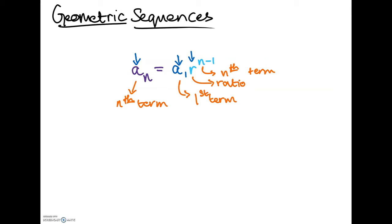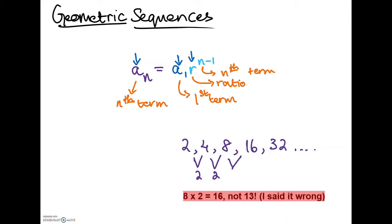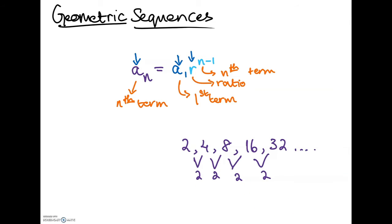In today's video we're going to be talking about geometric sequences. A geometric sequence is essentially any sequence where a constant multiplier is being multiplied. For example, the sequence 2, 4, 8, 16, 32 — 2 times 2 is 4, 4 times 2 is 8, 8 times 2 is 16, and 16 times 2 is 32. We're constantly multiplying by 2 onto each and every single term to get the next term.